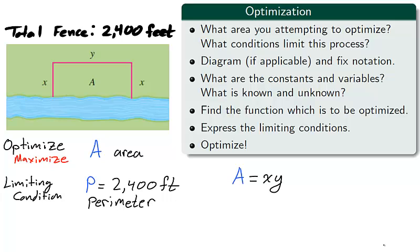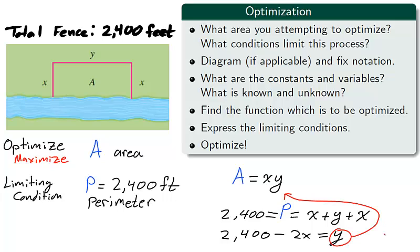We now can find the function which is to be optimized. The area of a rectangle is the product of its dimensions, x times y, and we can express the limiting condition P, which is equal to 2400, as x plus y plus x, the three sides of the rectangle we intend to enclose. The function A we wish to optimize has two variables, x and y, which are related through the limiting condition P. We can solve for the variable y and substitute it into the function A, and then A will be defined only in terms of x.